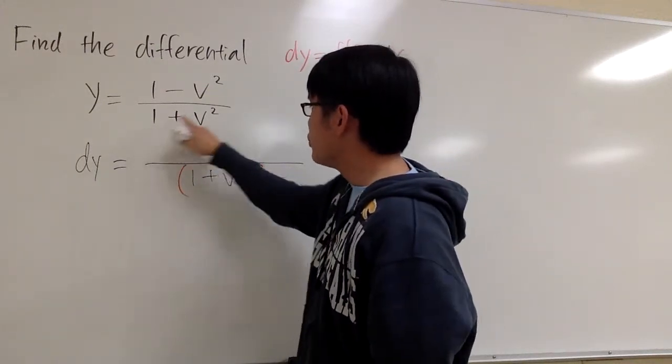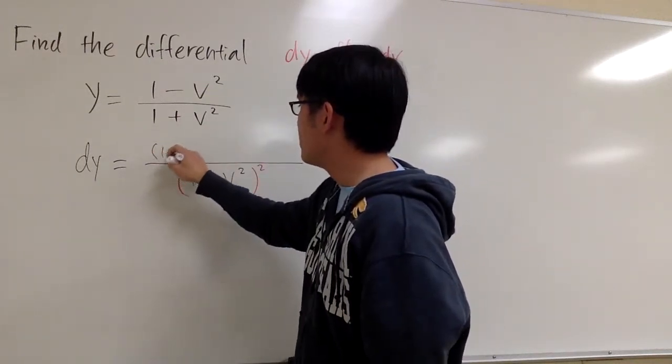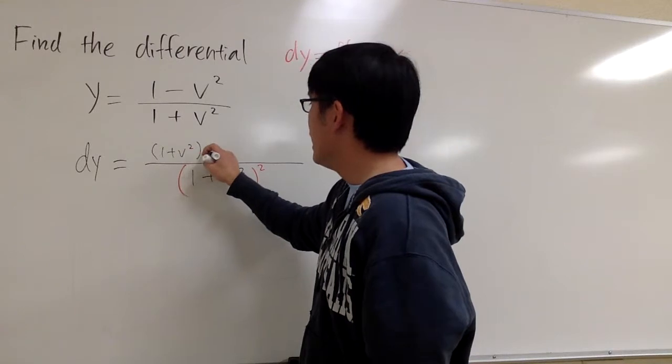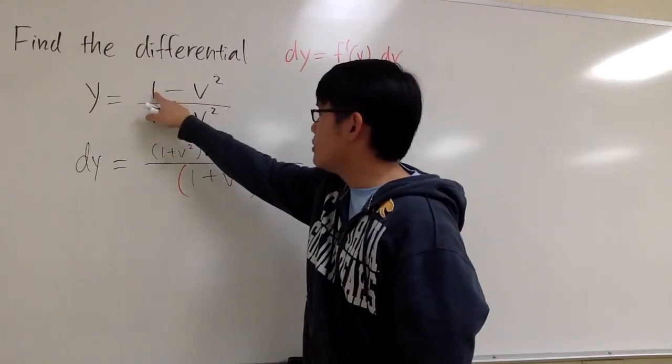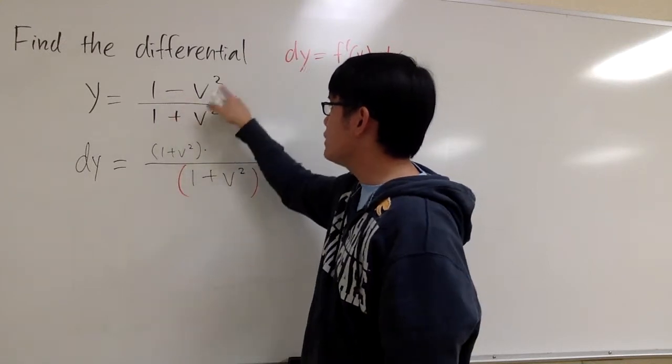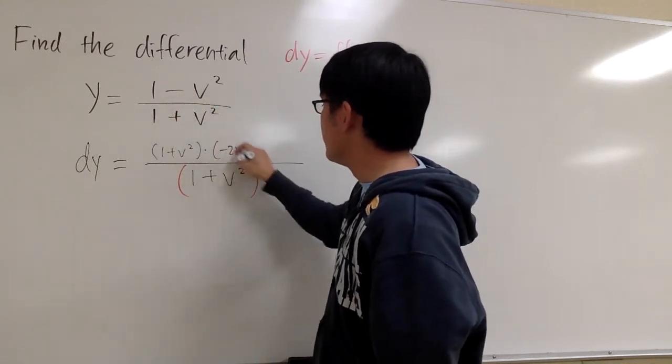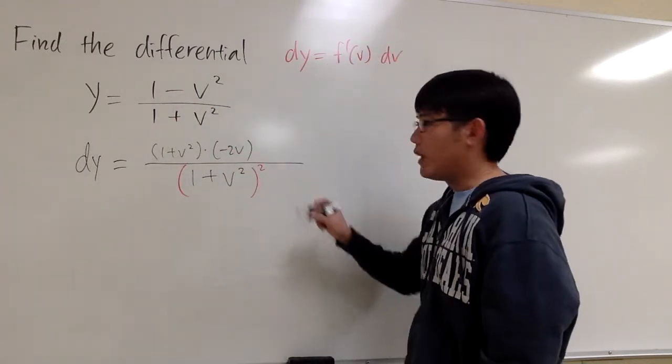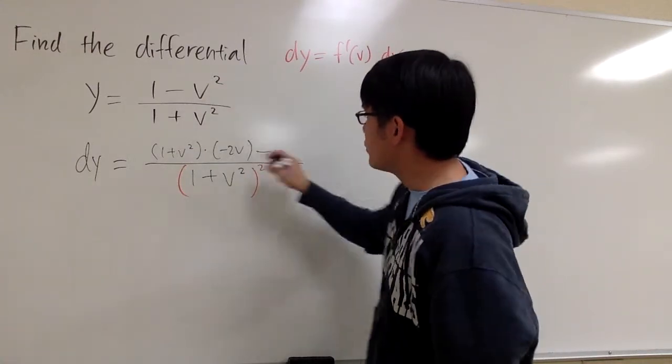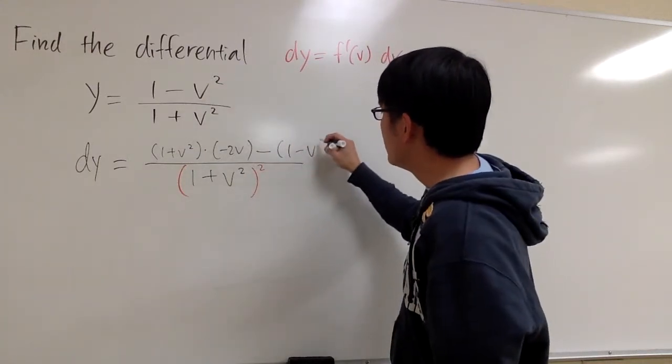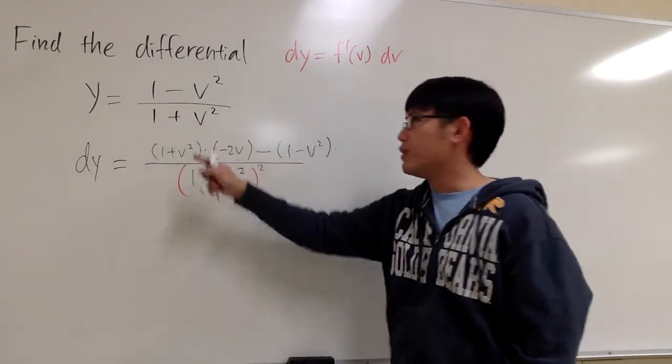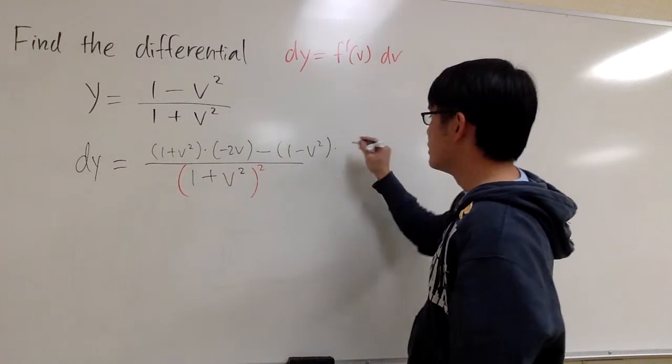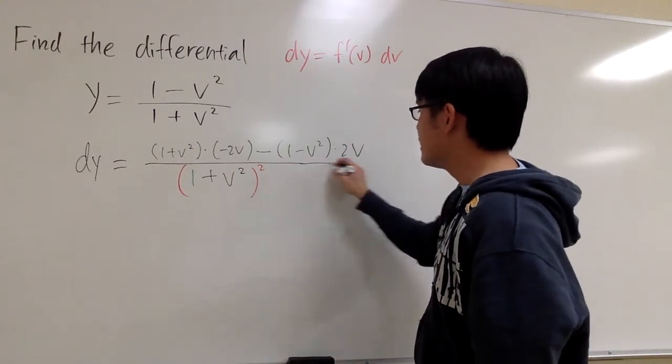And the quotient rule says, I'm going to take the bottom function, 1 plus v squared, and multiply by the derivative of the top. Derivative of 1 is 0, derivative of negative v squared is negative 2v. And then we will have to subtract the top function, which is 1 minus v squared times the derivative of the bottom. Derivative of 1 is 0, the derivative of v squared is 2v. And that's the setup.